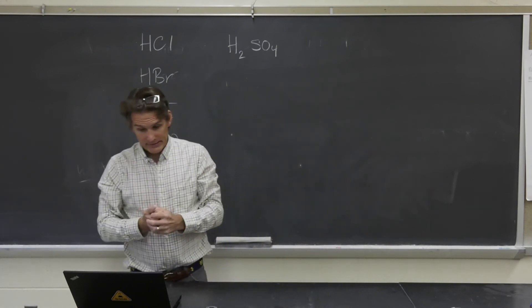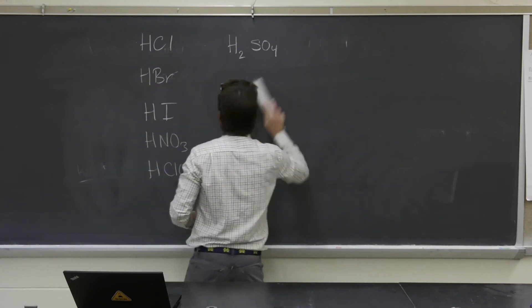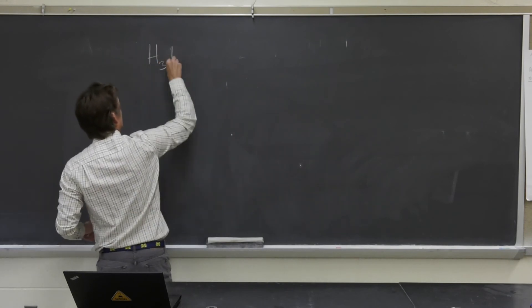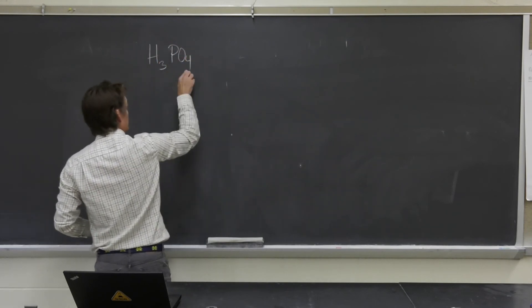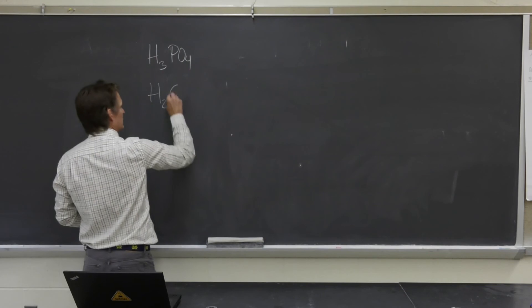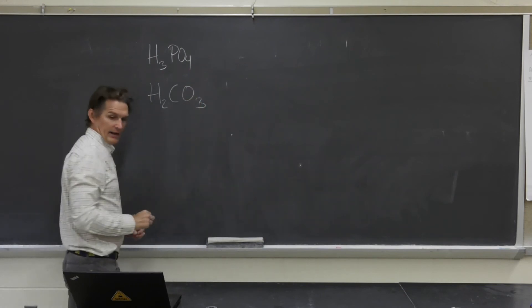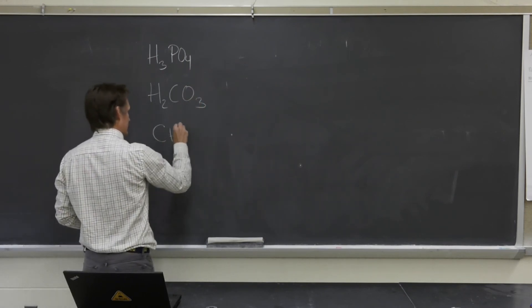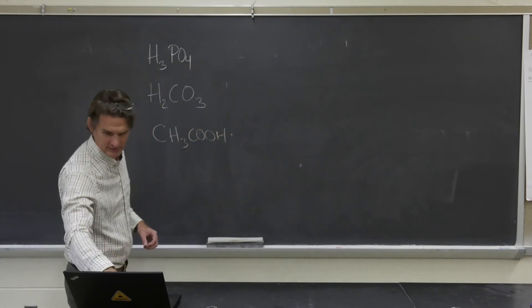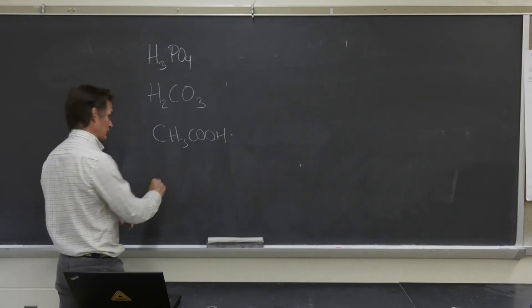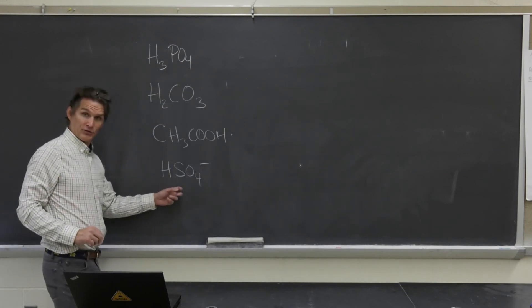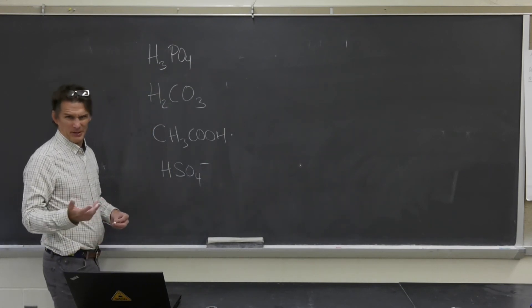Now we're going to look at the weak acids that I want you to be familiar with. These are phosphoric acid, H3PO4. They put this stuff in colas, give it a little bite. Carbonic acid, H2CO3, and acetic acid. And of course, I just showed you another weak acid. We know that the second proton coming off of the hydrogen sulfate ion, that's also a weak acid. You better know that.